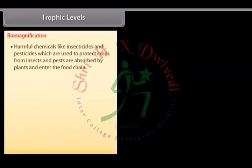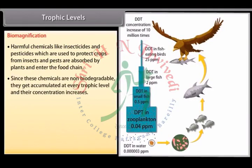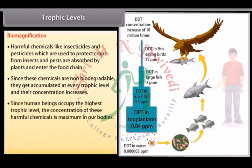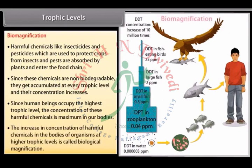Harmful chemicals like insecticides and pesticides, which are used to protect crops from insects and pests, are absorbed by plants and enter the food chain. Since these chemicals are non-biodegradable, they get accumulated at every trophic level and their concentration increases. Since human beings occupy the highest trophic level, the concentration of these harmful chemicals is maximum in our bodies. This increase in concentration at higher trophic levels is called biological magnification.